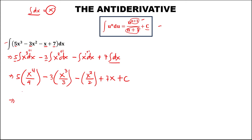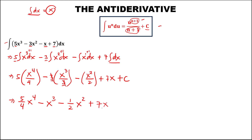To simplify: this becomes 5 over 4, times x to the power 4, then minus — 3 divided by 3 cancels — then minus 1/2 times x to the power 2, then plus 7x, then plus c. This is now the antiderivative.